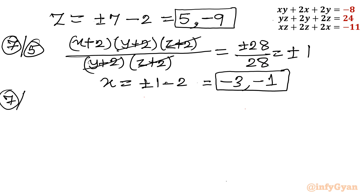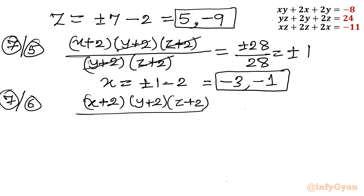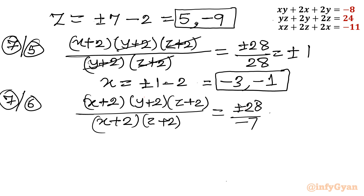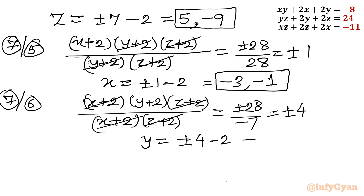Now consider equation 7 divided by equation 6: (x plus 2)(y plus 2)(z plus 2) divided by (z plus 2)(x plus 2) leaves (y plus 2). Right-hand side: plus or minus 28 over negative 7 equals plus or minus 4. So y equals plus or minus 4 minus 2, giving y equals 2 or y equals negative 6.